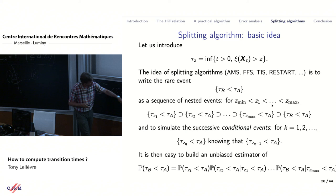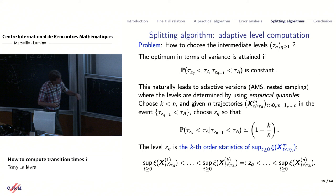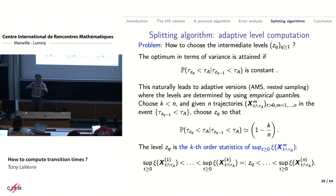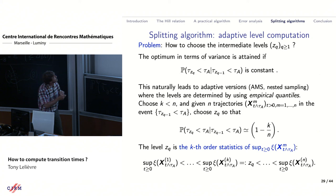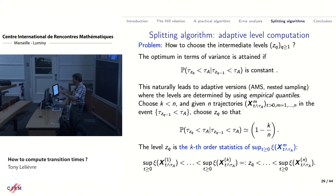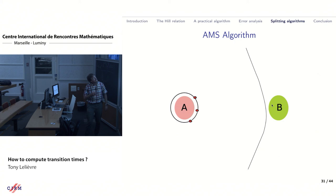This is the splitting technique: these factors are the 'one half' probabilities, and their product is the one half to the n. When you perform a variance analysis, you realize the best approach is to have the same probability at each level — equilibrating all these conditional probabilities. In practice, rather than choosing the sigma_{z_q}'s and checking, you choose the desired probability and define the milestones adaptively to keep this probability constant.